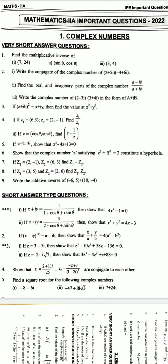Find the multiplicative inverse of 7 comma 24, sine theta comma cosine theta, 3 comma 4. Second question: write the conjugate of the complex number 2 plus 5i minus 4 plus 6i. Find the real and imaginary parts of the complex number a minus ib by a plus ib. Write the complex number 2 minus 3i into 3 plus 4i in the form of a plus ib.